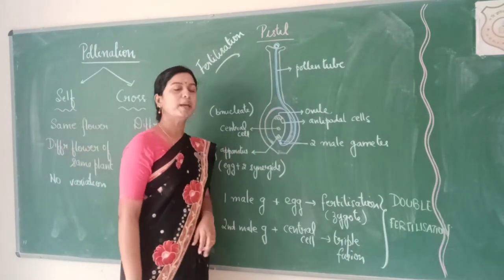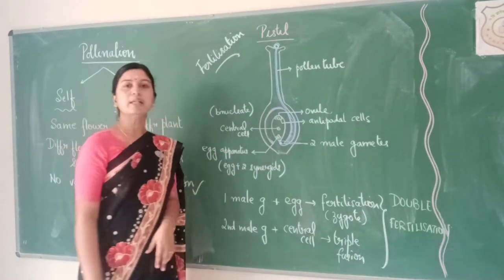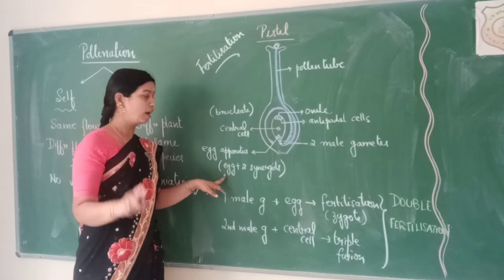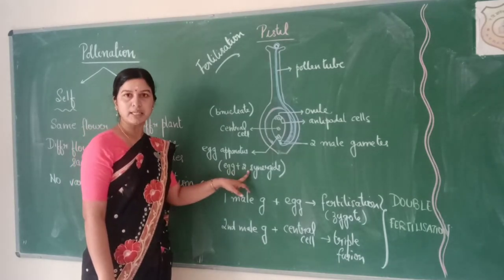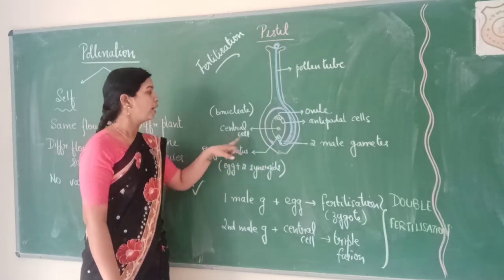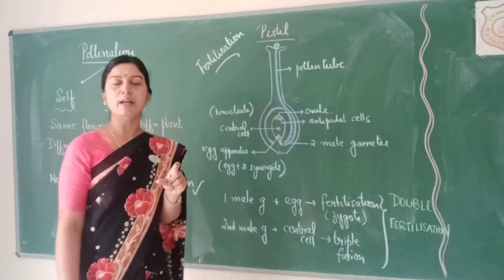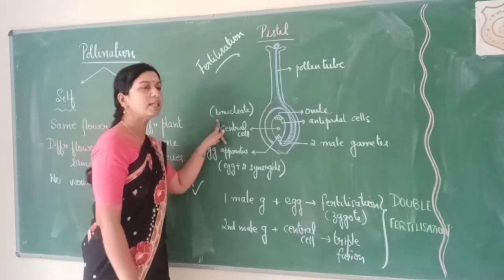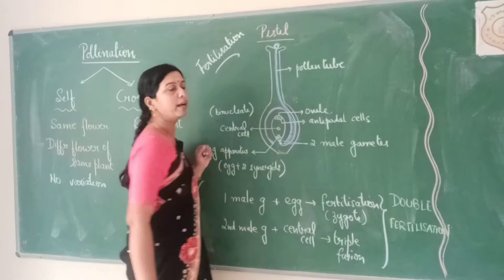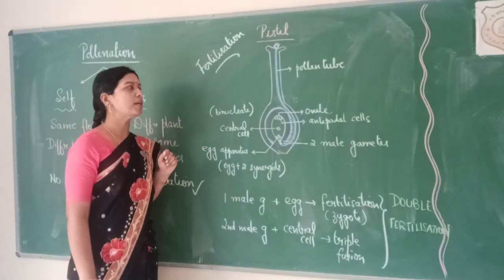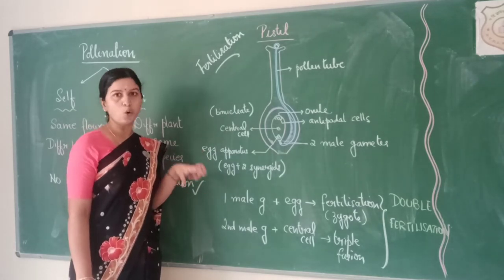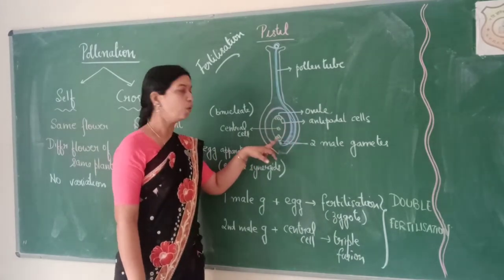At one end, we have three cells termed as the egg apparatus. The egg apparatus contains one egg and two other cells called synergids. In between, there is a central cell which has two nuclei — it is also called binucleate, a single cell with two nuclei. Towards the other end, there are again three sets of cells termed as antipodal cells. All these are inside the embryo sac, inside the ovule.